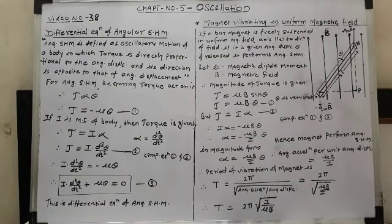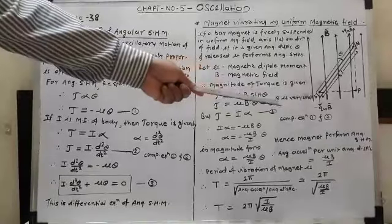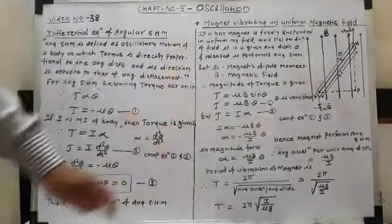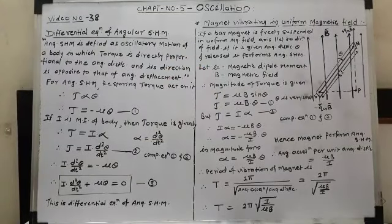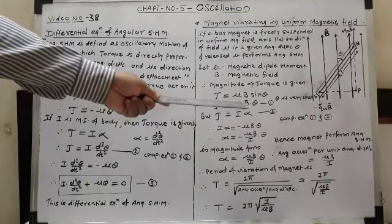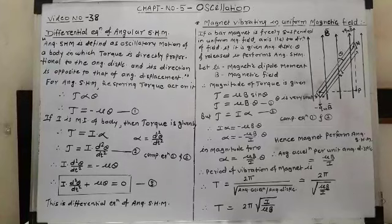If θ is very small, then sinθ ≈ θ. Therefore the torque becomes τ = μBθ. This is equation number 1.